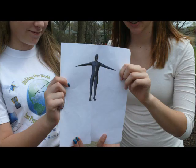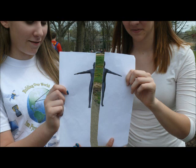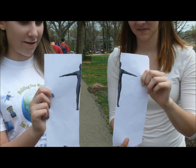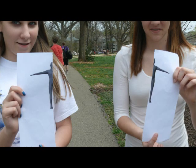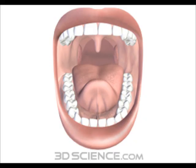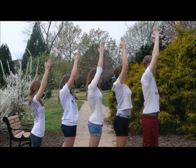Platyhelminthes, they have bilateral symmetry. This means they split into two pieces. Platyhelminthes, they have an open digestive tract and use diffusion, and commonly known as flatworms.